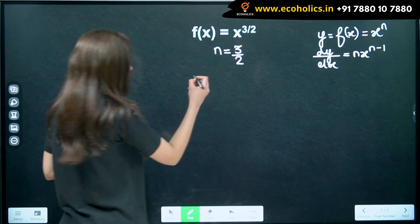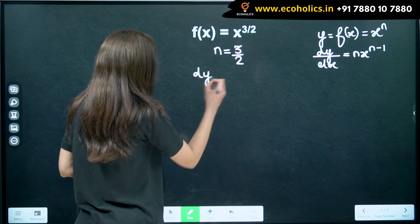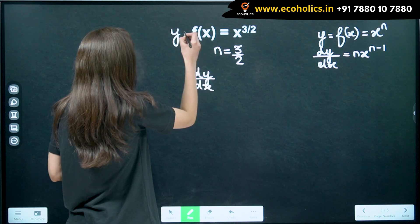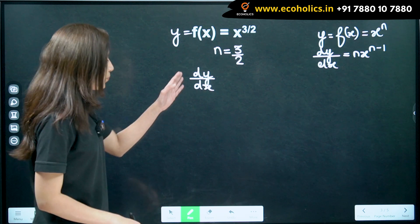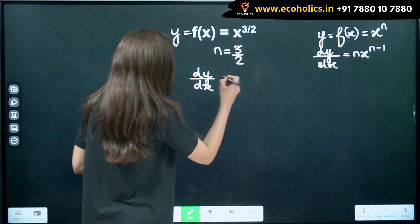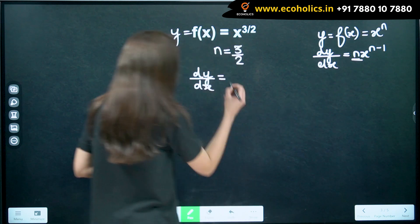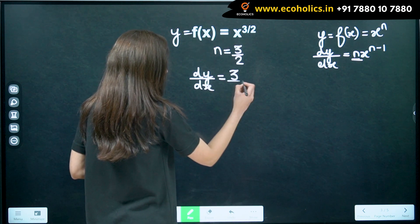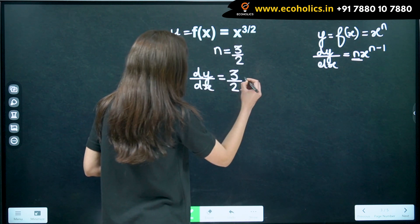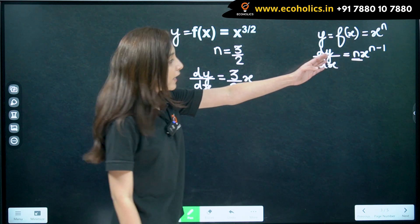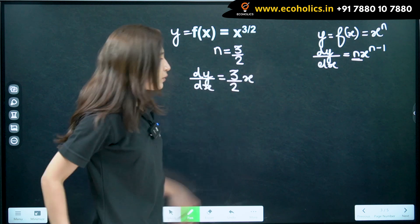what do we get is, that is, dy by dx. So, dy by dx is equal to, we have n as 3 by 2. Now, we have x and now, n minus 1. So, our n is 3 by 2 minus 1.